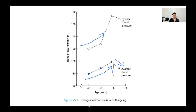This graph from Power and Camp shows how diastolic pressure changes. As you get older, it increases because of the increase in peripheral resistance or reduction in compliance. But then after that, diastolic pressure starts dropping because of the loss of the Windkessel effect.